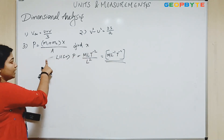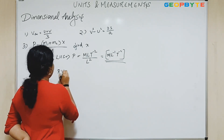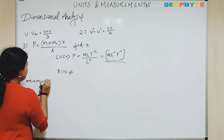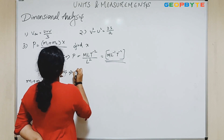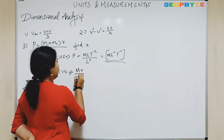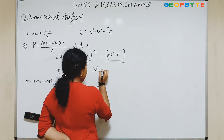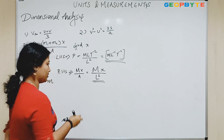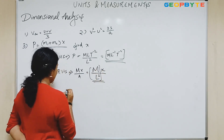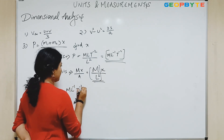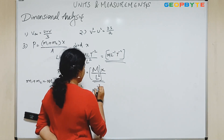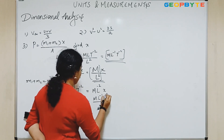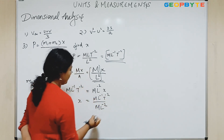Now we will see the dimensional equation of the right-hand side. M1 plus M2 can be considered as M. We have M times X times A. Area is L squared. We don't know what X is, so we will keep it. Divided by area which is L squared. Now we will equate the left-hand side and right-hand side: M L to the power minus 1 T to the power minus 2 equals M times X divided by L squared. So X equals M L to the power minus 1 T to the power minus 2 divided by M L to the power minus 2. M cancels, and we get X equal to L T to the power minus 2.